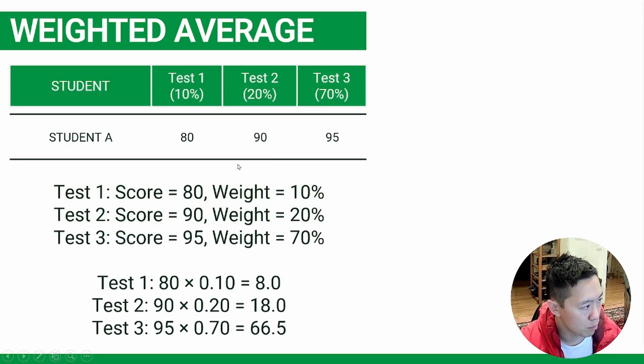Well, this is where you just do a sum product where you multiply the score on the first test by the weight, score on the second test by the weight, and then lastly, score on the third test by the weight.